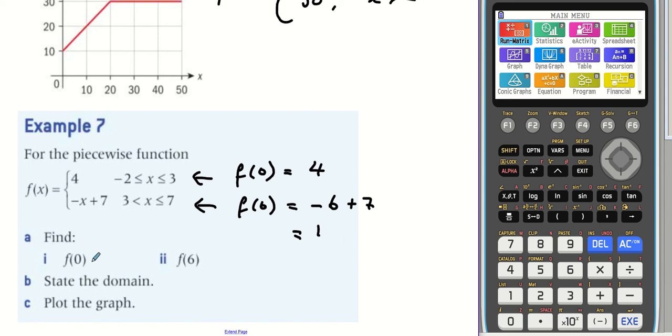So this part, when we're finding the value, we would use this function because our x was in this range, the domain, this part of the domain. And here we'd be using this function because six is in this part of the domain.